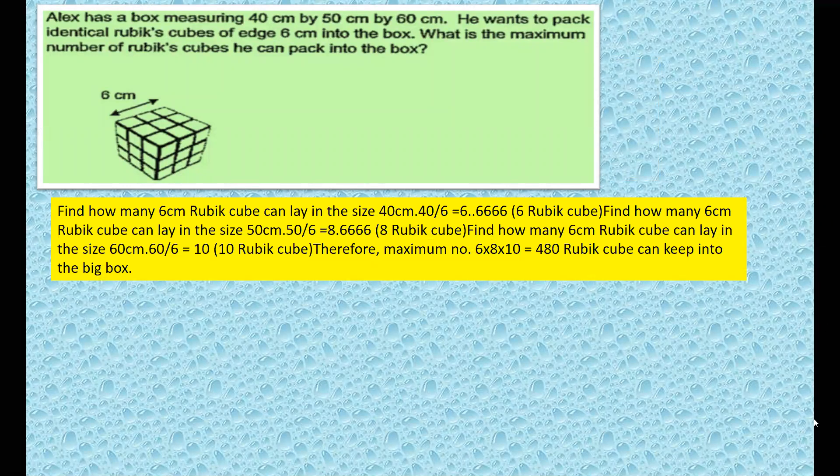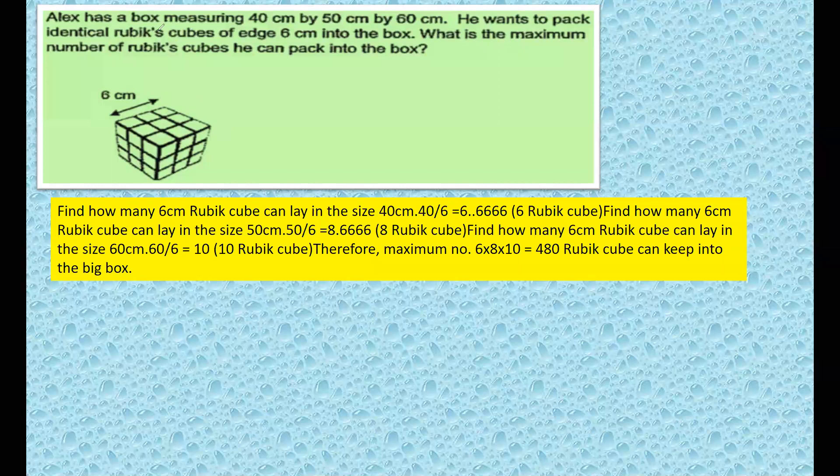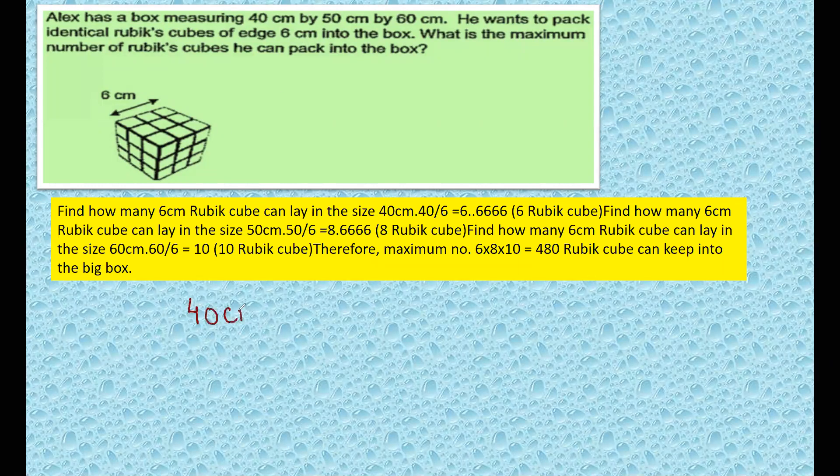Now this is a very good question. Try to understand this - every time this type of question is appearing. Alex has a box measuring 40 centimeter by 50 centimeter by 60 centimeter. He wants to pack identical Rubik's cubes of edge 6 centimeter into the box. We have to take individually how much will fit in each side.